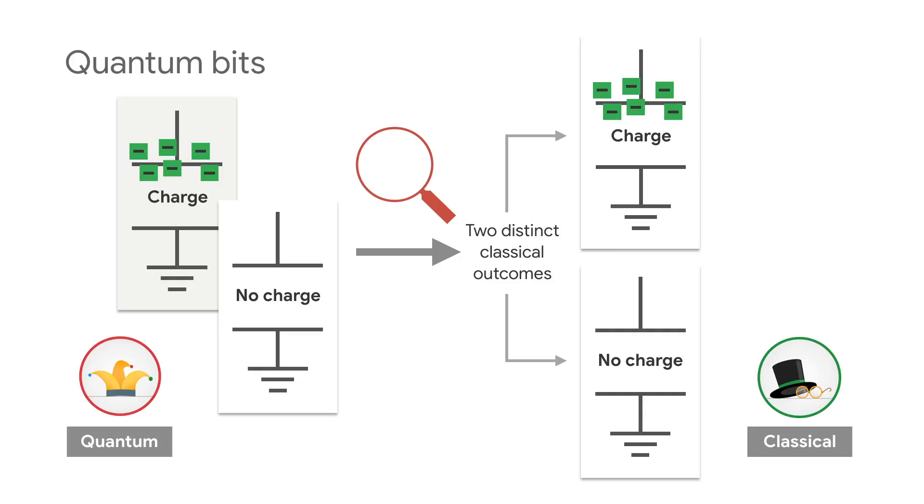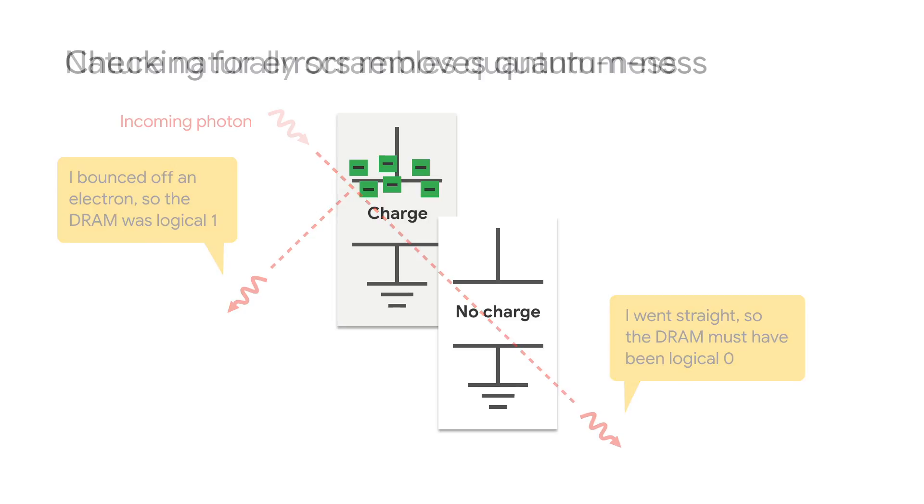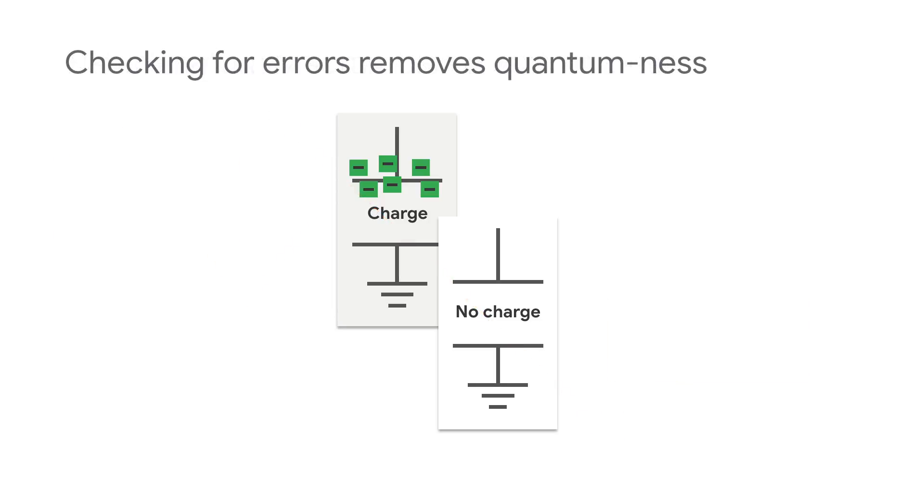In fact, that collapse happens even without us checking for errors. A single photon interacting with just one of our electrons can carry off information. When that happens, it's as if the photon observed the quantum state, and the state collapses. You can think of this as nature observing, and thus destroying, our quantum states.